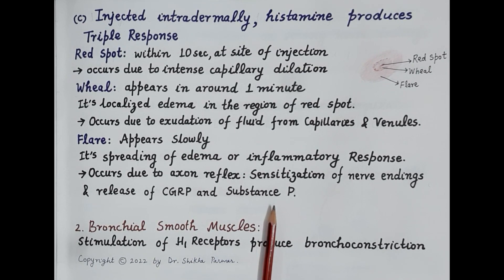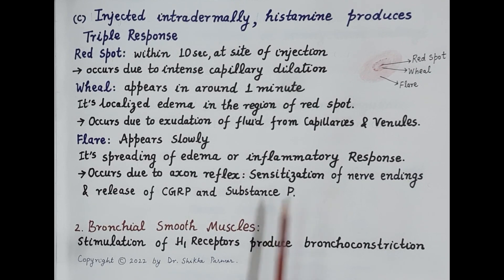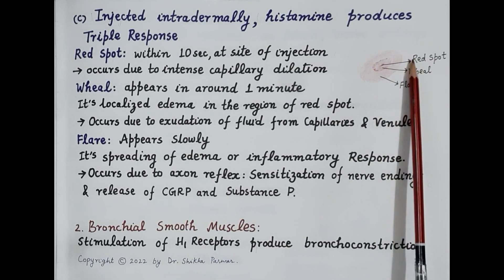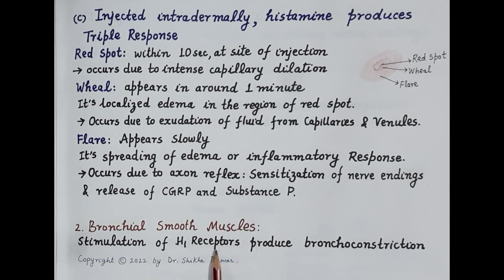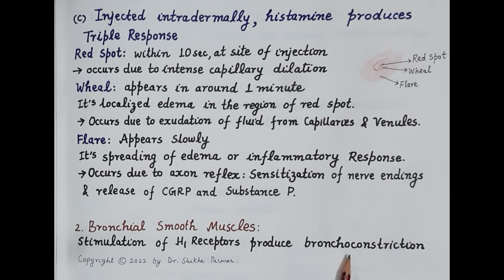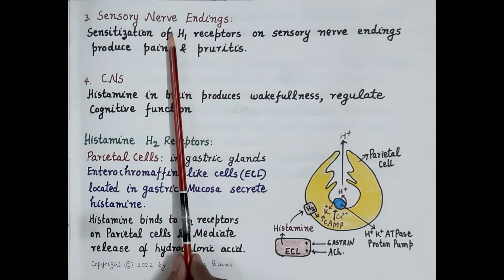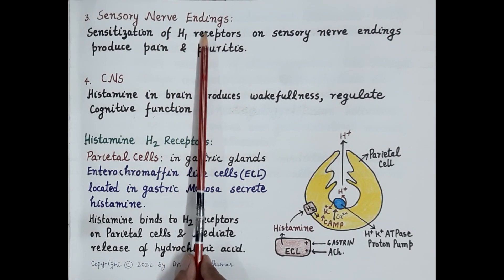Regarding the effect of histamine on bronchial smooth muscles: stimulation of H1 receptors on bronchial smooth muscles produces bronchoconstriction. Bronchoconstriction causes difficulty in breathing — another important sign of allergic reactions.